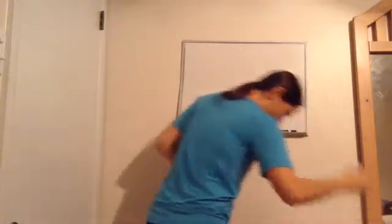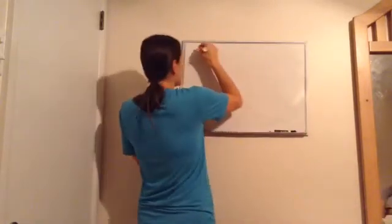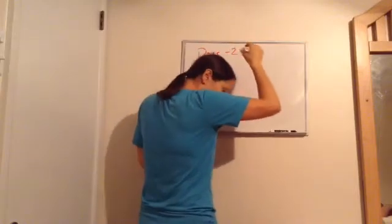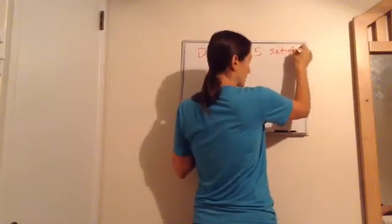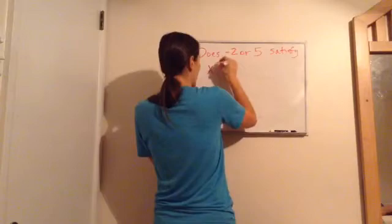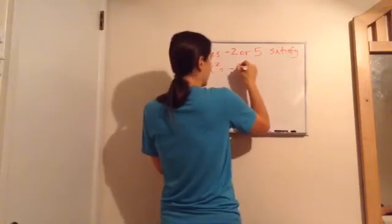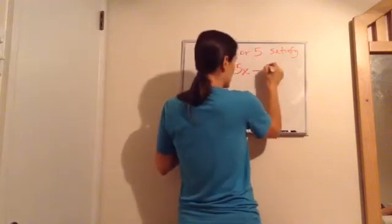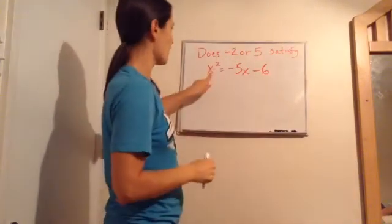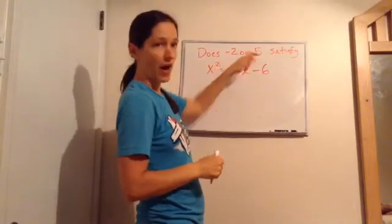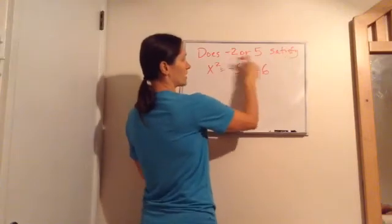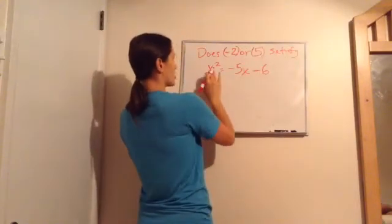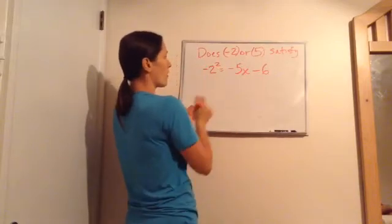Do you understand it? All right. Now, here's what they say. Does negative two or positive five satisfy this equation? And I'm going to give you the equation. X squared equals negative five X minus six. Now, what they're wanting you to do is for X, we're going to put a negative two or a five. So let's start with negative two for our X's. We're wondering if this or this satisfies the equation.